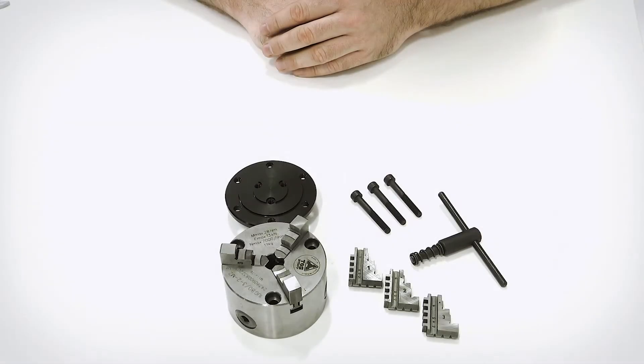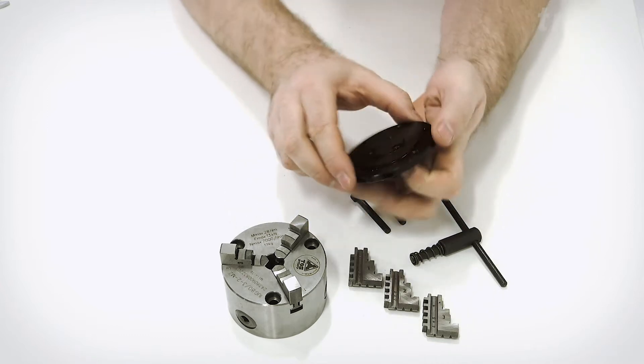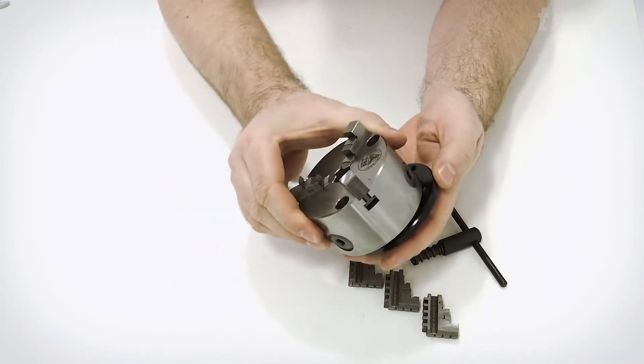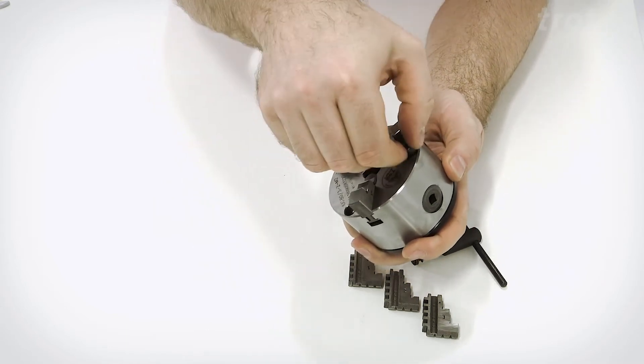When you order these, this is how they come once you have unboxed it. Here is an example of the standard three jaw chuck. Mount the chuck on the adapter plate and attach it with the three screws.